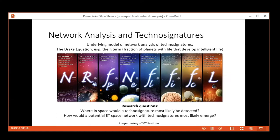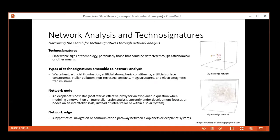A model we work from is the Drake equation, especially with the term f sub i, the fraction of planets that would develop intelligent life—operationalizing or trying to measure that. A research question would be: where in space would a technosignature most likely be found? That's where network analysis can come in. An interrelated question is: how would a potential ET space network with technosignatures most likely emerge? When we're talking about networks here, you can look at various kinds of technosignatures: waste heat, artificial illumination, artificial atmospheric constituents, megastructures—so it's non-radio as well as radio aspects.